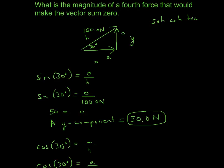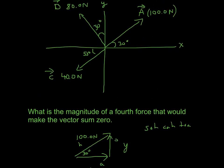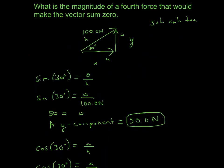We go back and confirm: the opposite side is the y-axis, so it's going to be the y-component of A, which equals 50 Newtons. Since this isn't the final answer, you can put as many sig figs as possible, but I put three because that's usually the norm of three significant figures.